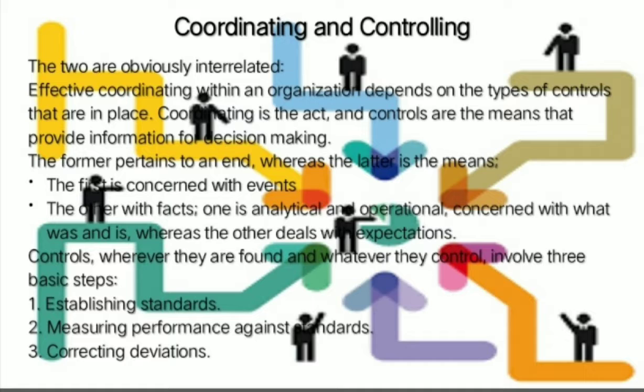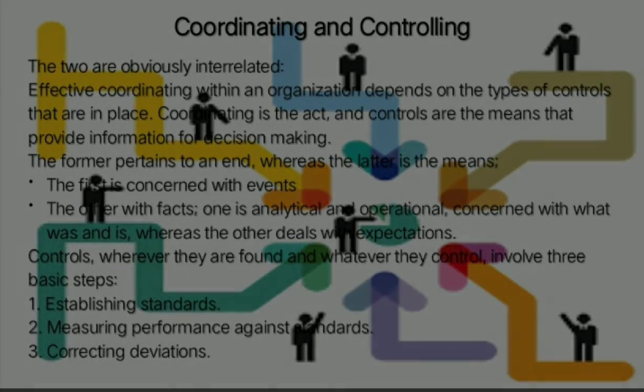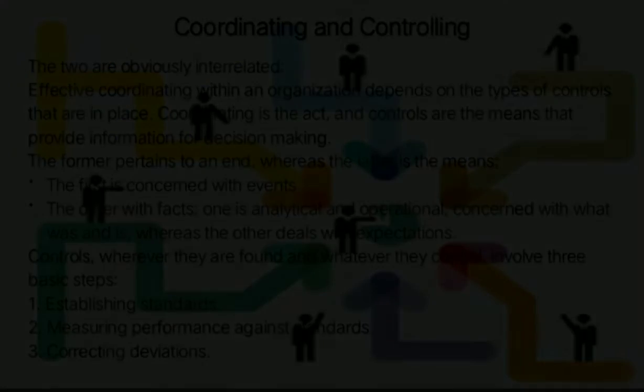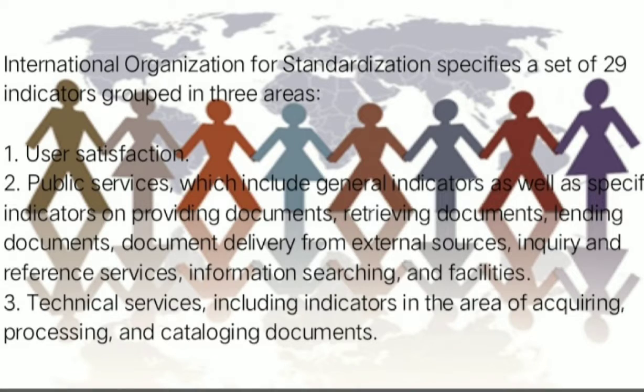One is analytical and operational, concerned with what was and is, whereas the other deals with expectations. Controls, wherever they are found and whatever they control, involve three basic steps. First, establishing standards. Second, measuring performance against standards. And lastly, correcting deviations. The International Organization for Standardization specifies a set of 29 indicators grouped in three areas.